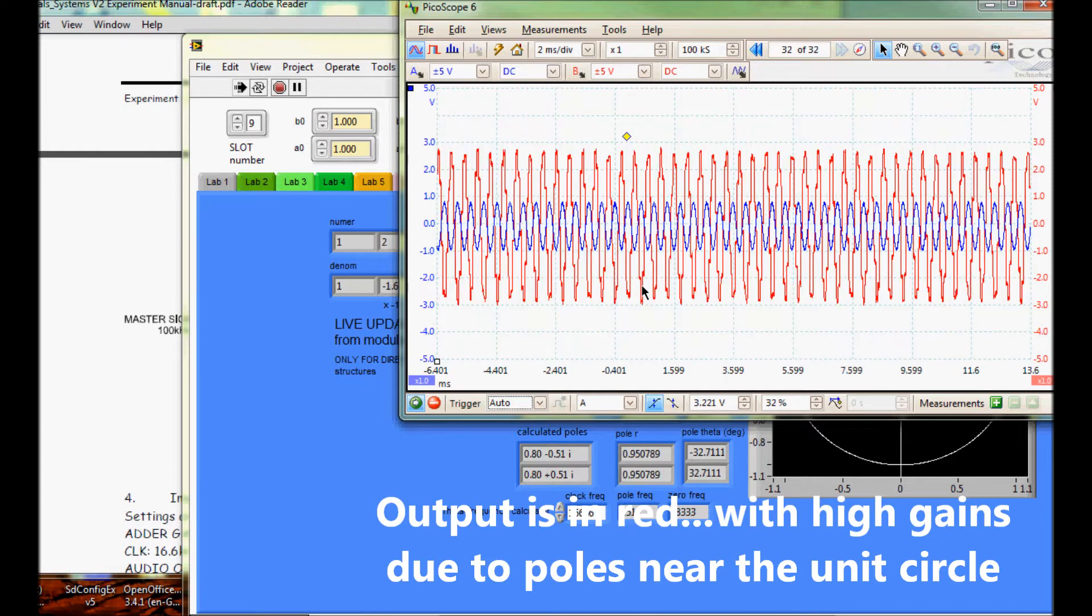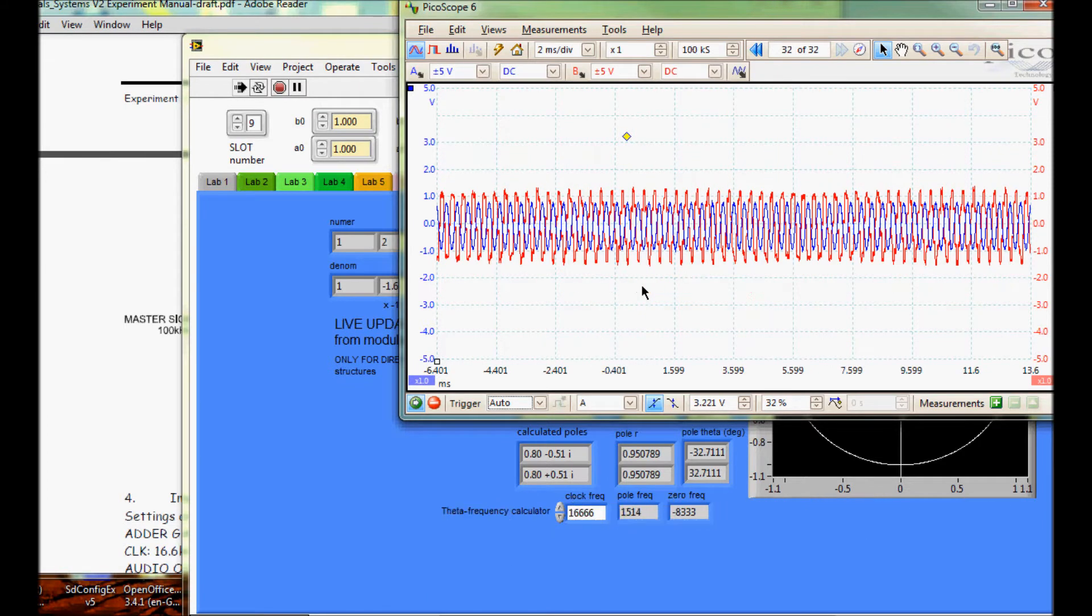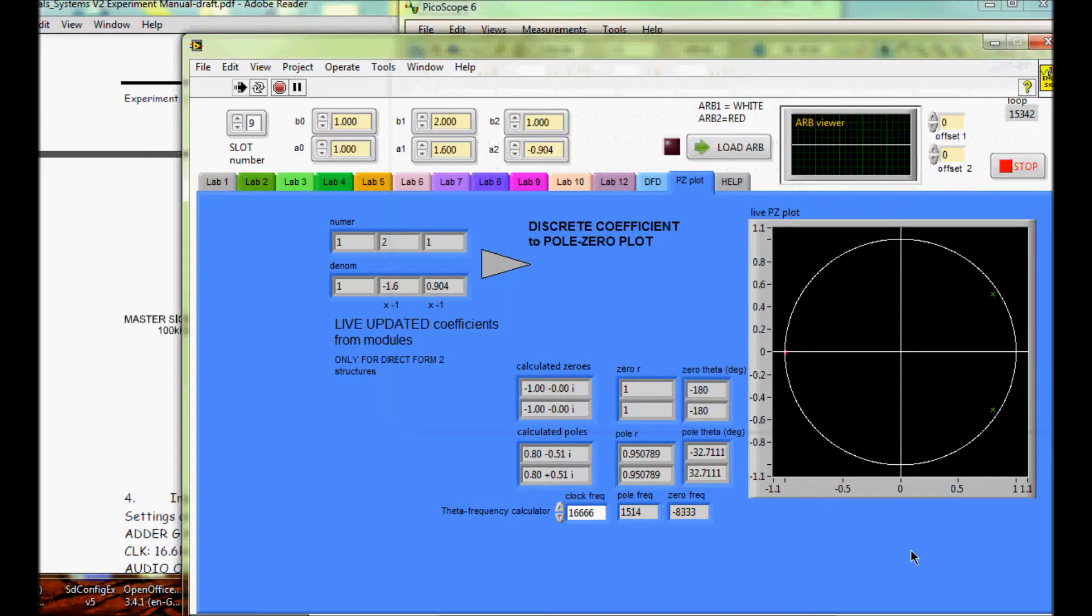Looking at the Z-plane display, there are poles near the unit circle and a zero.